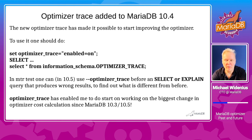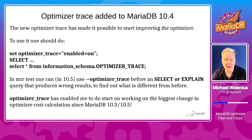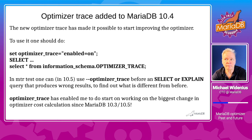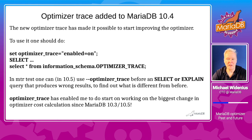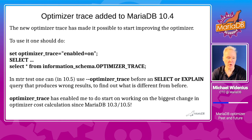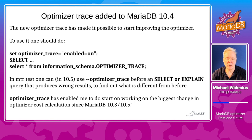But in 10.4, MariaDB added the optimizer trace, and that has made it quite easy to see where the costs for a query come from. You can enable it by setting optimizer trace on, then do a SELECT or EXPLAIN, and then query information_schema to see what different optimizations were considered by the optimizer and the costs for those. They also added a way that in MTR tests you can add one line to get an EXPLAIN for the next query, which is very useful when you want to see what changed. It was thanks to the optimizer trace that I was able to start on my current project, which is what this talk is all about.